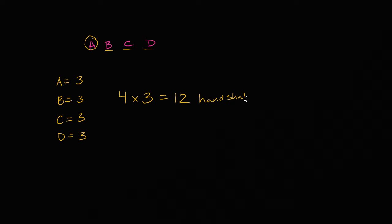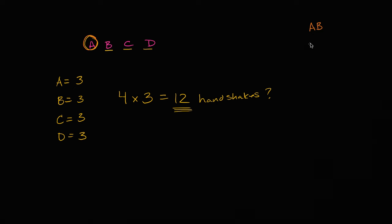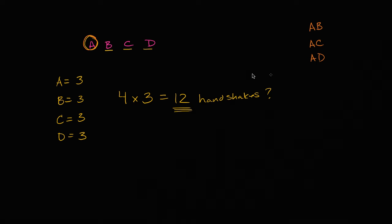So my question to you is: do you feel good about this number? Pause the video and think about it. Let's actually draw it out and visually represent each handshake that goes on. Let's talk about all of the handshakes that A engages in: A is going to shake B's hand, A is going to shake C's hand, A is going to shake D's hand. So this still seems consistent with what we have.